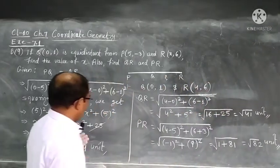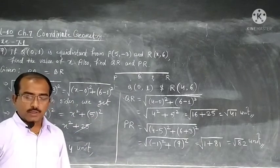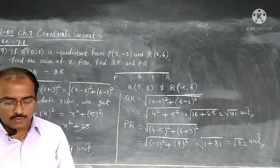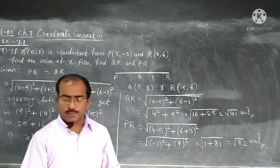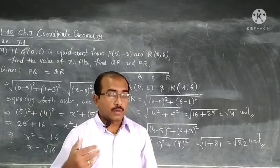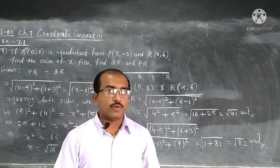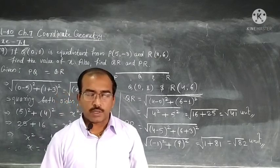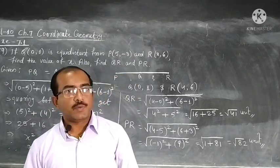Using first we found value of x and then we found QR and PR hope you have understood. Now, only one question is remaining if you have any doubt in that please give comment because similar question only or then if you have doubt please give comment I will be making video with a proper explanation on that question also or see you in next video with new exercise 7.2.